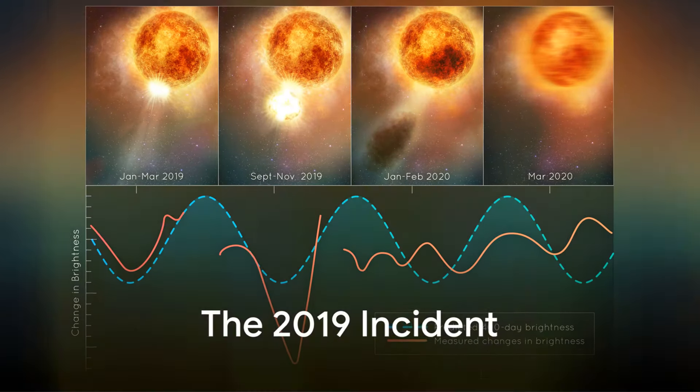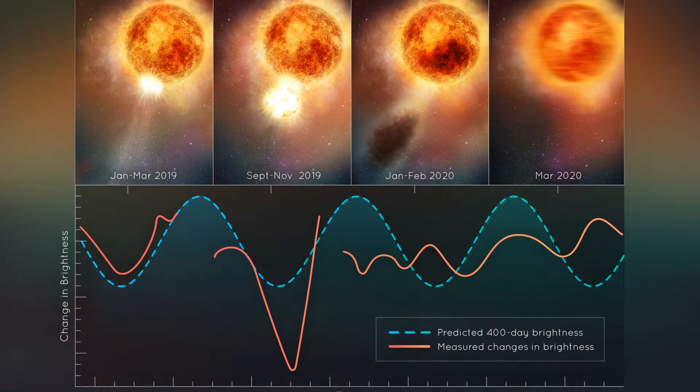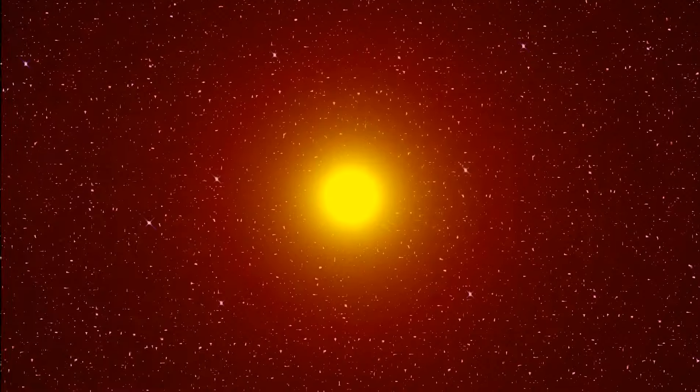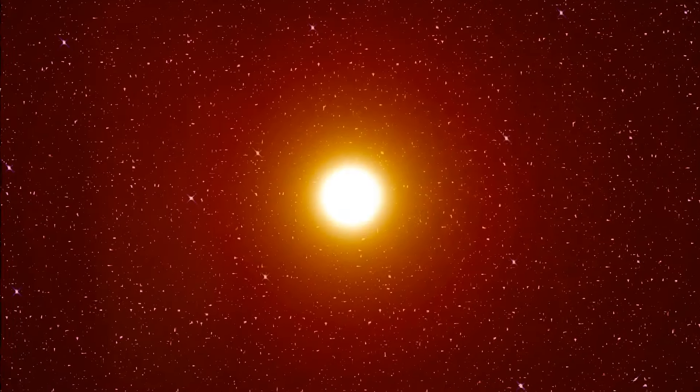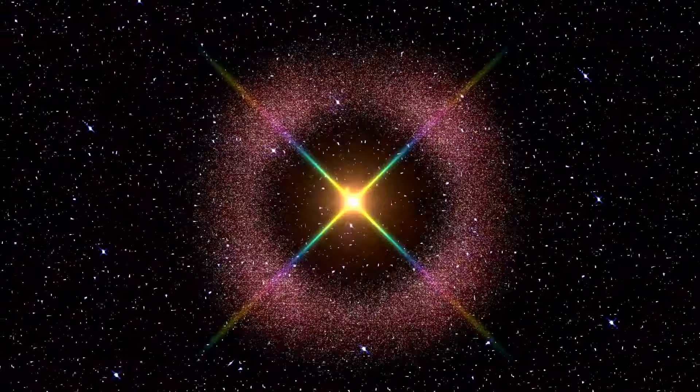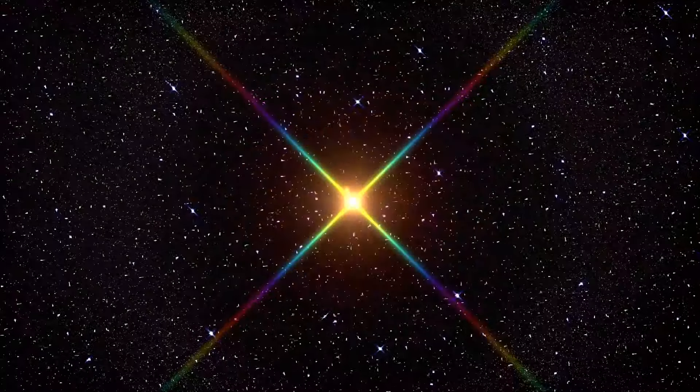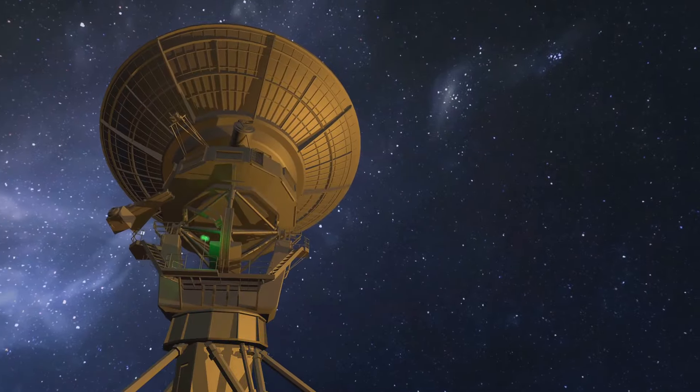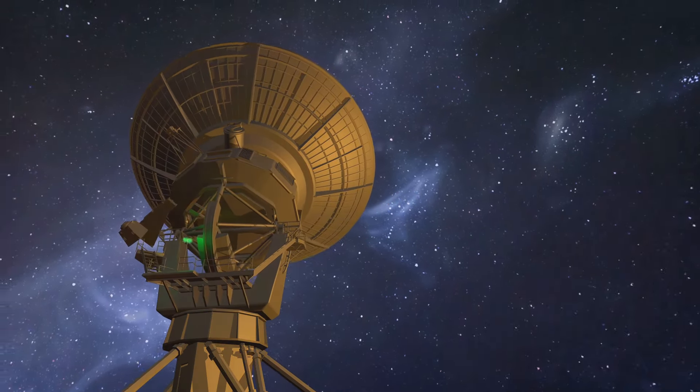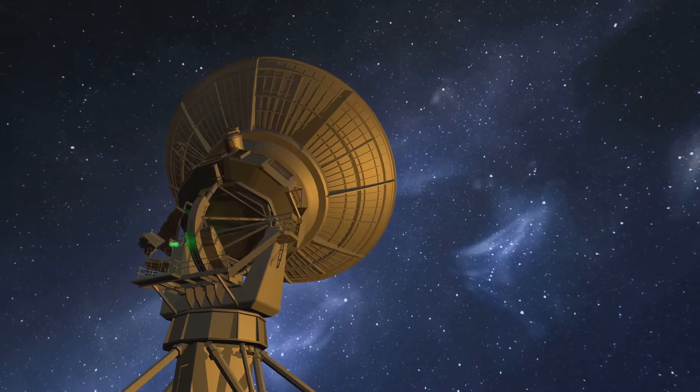In late 2019, astronomers noticed something unusual about Betelgeuse. The star, typically one of the brightest in the night sky, began to dim dramatically. This wasn't just a minor fluctuation, Betelgeuse's brightness plummeted to unprecedented levels. The astronomical community was abuzz with excitement and speculation. Was this the beginning of the end for Betelgeuse? Was the long-awaited supernova imminent? Telescopes around the world and in space were trained on the red supergiant, eager to capture every detail of this unprecedented event. Theories abounded.